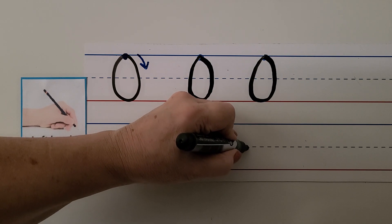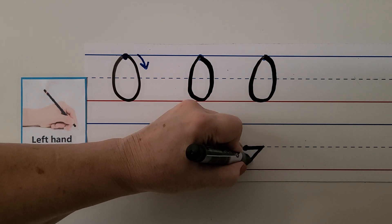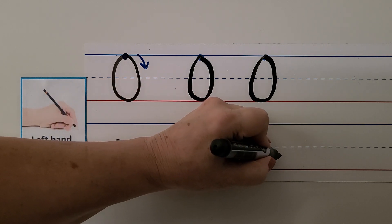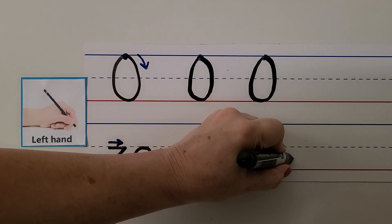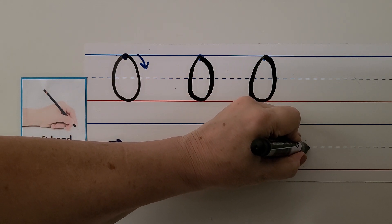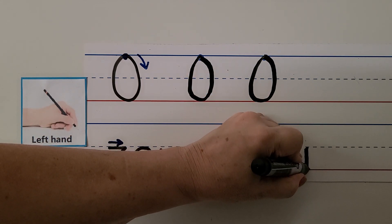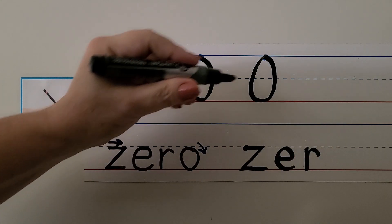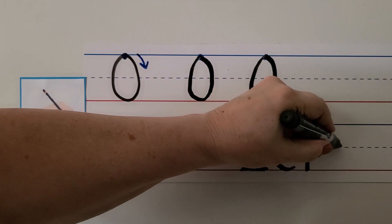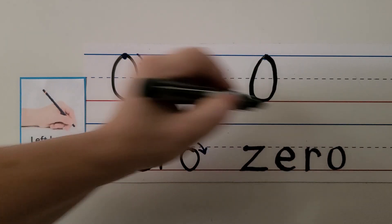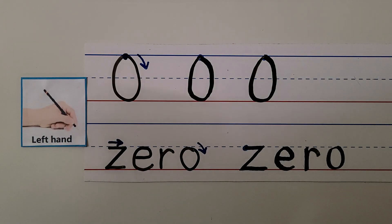We start here, we go across, come down on a slant towards our hand, and then back out. For the e, we start here, we go away, and then up and around. For the r, we start here and we come down and bounce around. And for the o, we start here, go away from our hand, come around, and then back up again. Zero. We wrote the number zero and the word zero.